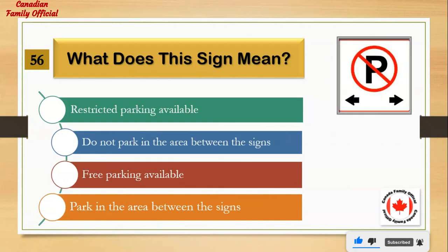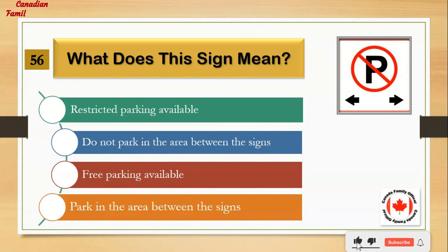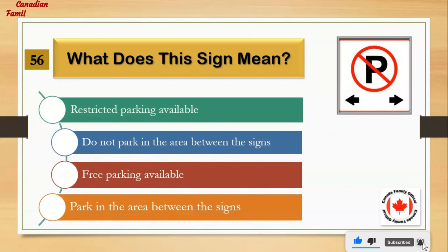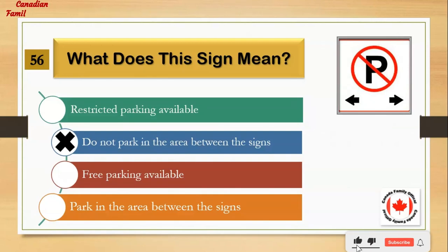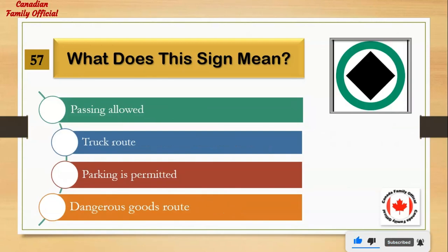What does this sign mean? Number 1: restricted parking available. Number 2: do not park in the area between the signs. Number 3: free parking available. Number 4: park in the area between the signs. And the answer is: do not park in the area between the signs.